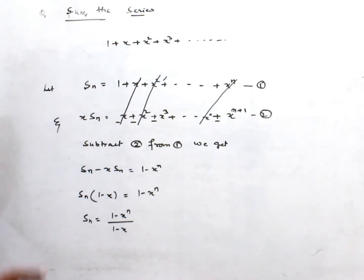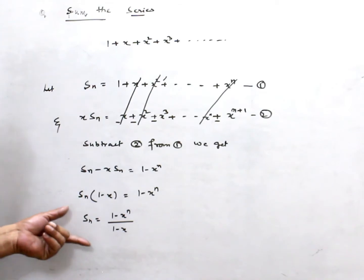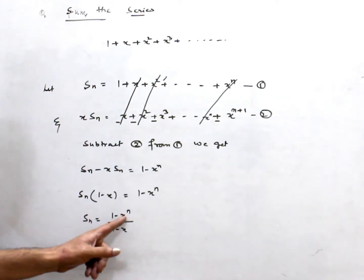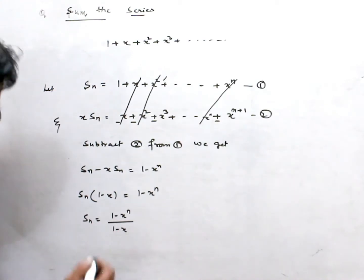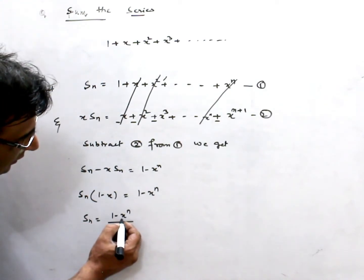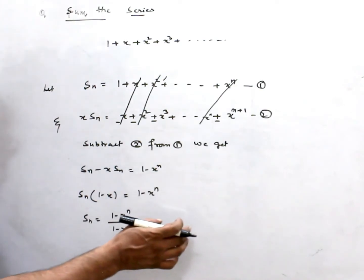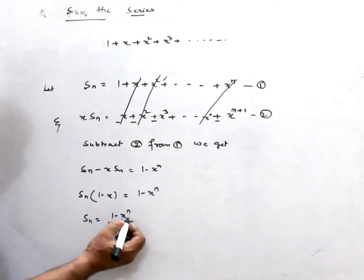So Sn is equal to (1 minus x to the n) divided by (1 minus x). This is the partial sum. Now if I take the limit as n approaches infinity, Sn will converge to infinity or some finite number — it depends on this number x.